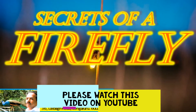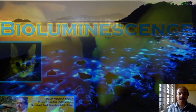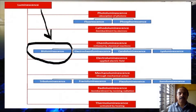Bioluminescence is a biological phenomenon which occurs in many animals and plants. It's a type of luminescence — actually the emission of light from a substance that does not arise from heating. If light arises from heating, it is called incandescence. There are many types of luminescence; three are very important biologically: fluorescence, phosphorescence, and bioluminescence.